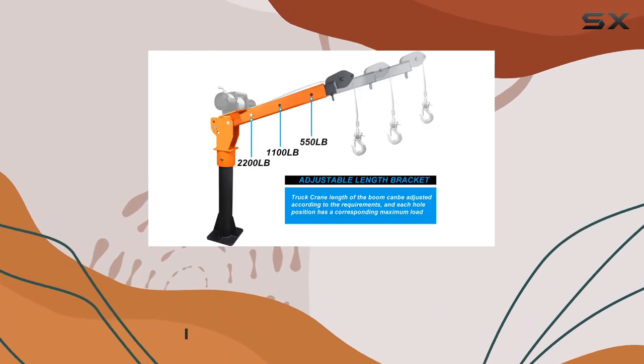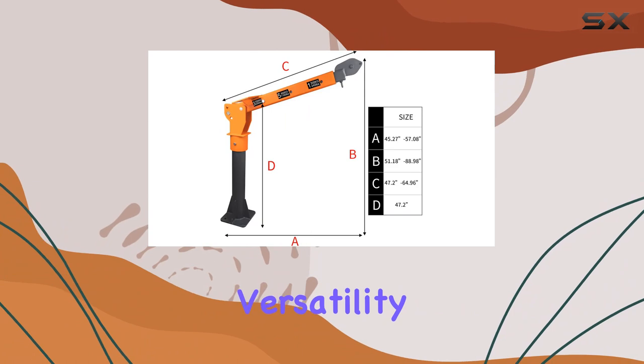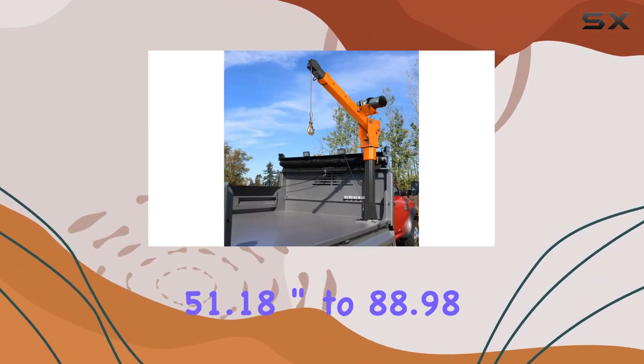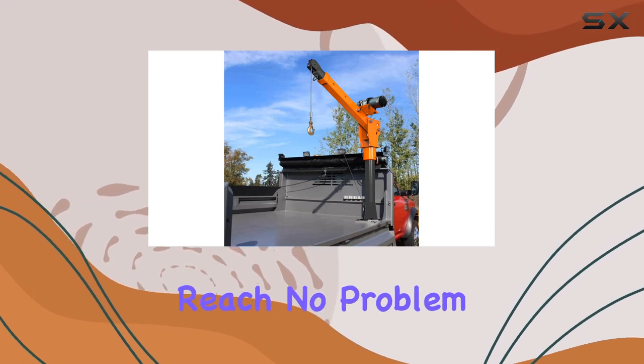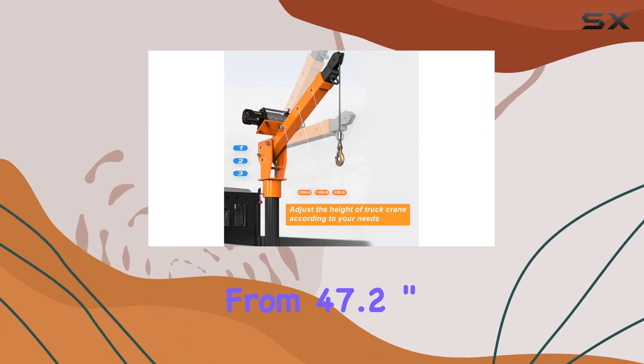What sets it apart are the three elevation settings offering versatility with boom height adjustments ranging from 51.18 inches to 88.98 inches. Need a specific reach? No problem. The adjustable boom can extend from 47.2 inches to 64.96 inches, catering to various hauling requirements.